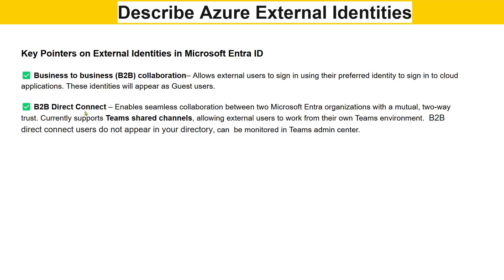B2B Direct Connect is for organizations that are both already using Microsoft Entra. It enables seamless collaboration between two Microsoft Entra organizations with a mutual two-way trust. It currently supports Teams shared channels, allowing external users to work from their own Teams environment. B2B Direct Connect users do not appear in your directory because they have their own Entra environment where they are managed, but they can be monitored in the Teams admin center.